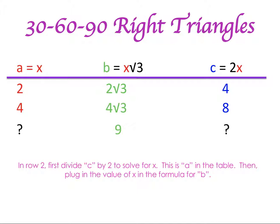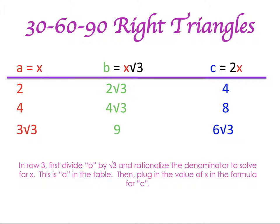Last line: our long side is 9. What we need to do is set up an equation — X times the square root of 3 equals 9. Then we had to divide both sides by the square root of 3 in order to solve for X. Once we did that, we had to rationalize the denominator. This gave us our value for X. Once we had our value for X, we just double it to get our value for the hypotenuse.